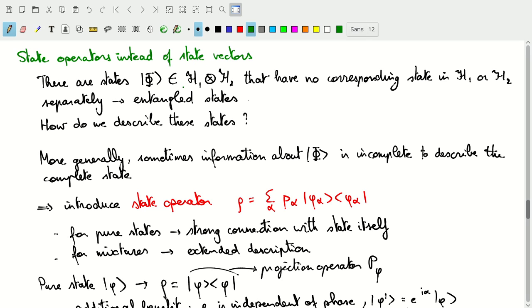If, for example, we only have the opportunity to measure one part of those Hilbert states, if we only have access to H1 and not to H2, there is some unknown aspects about the state that we cannot access.